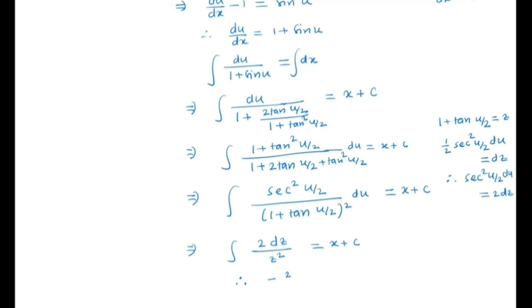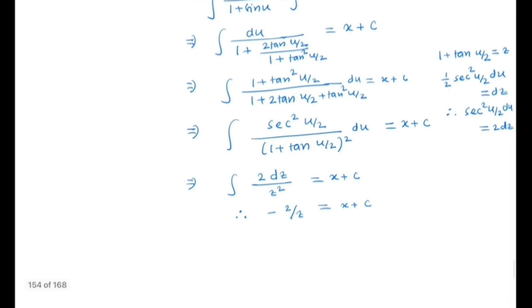By integrating, we get minus 2 over z equals x plus c. Now, z is 1 plus tan(u/2), and u is x plus y. So substituting back, minus 2 divided by (1 plus tan((x plus y)/2)) equals x plus c, which is the general solution.